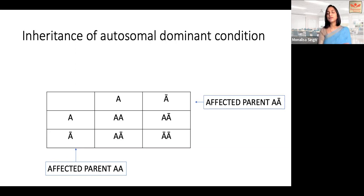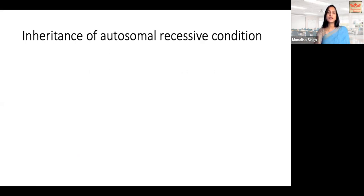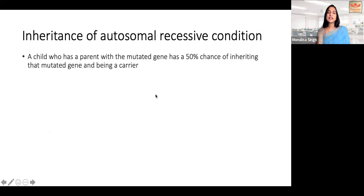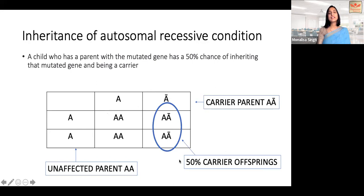Now for autosomal recessive conditions — look at the three-into-three box for a carrier parent. One allele is mutated but the parent is not affected because only one allele is mutated. Drawing the box with one carrier parent and one normal parent, each offspring has a 50% chance of being a carrier. If both parents are carriers and you add the second parent's mutation, one of the four boxes inherits both mutated alleles — so each offspring has a 25% chance of being affected and a 50% chance of being a carrier.